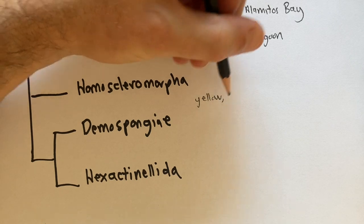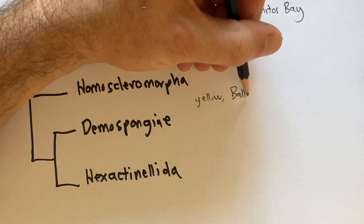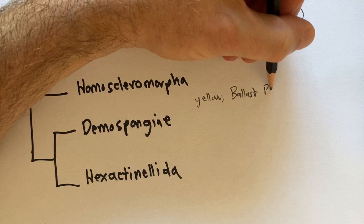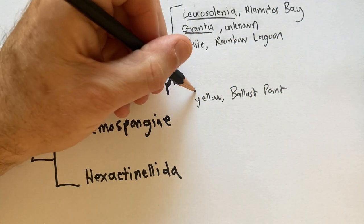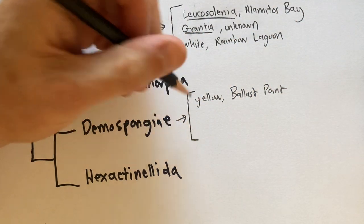Next, let's look at a yellow sponge that is quite common on docks in Alamitos Bay. This one is from a dock near the mouth of the bay, a dock that's right in front of the Ballast Point Brewery.